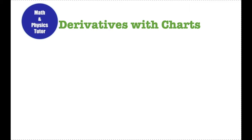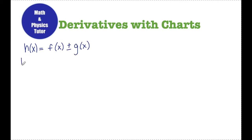Some important skills that you're going to definitely need to know before moving into this. If I have a function h of x that's split up by plus and minus signs, I can take the derivative of each of those individually to find the derivative h prime. I could just take the derivative of f and/or the derivative of g to find the derivative of h.